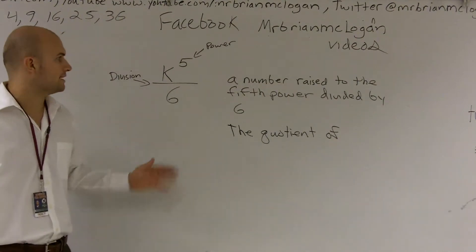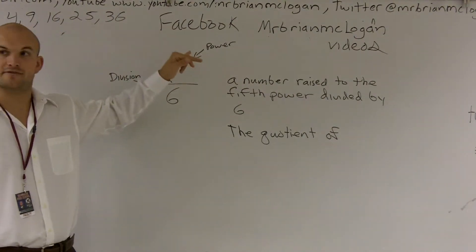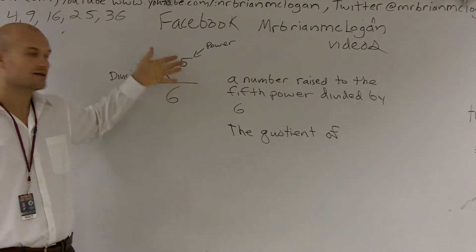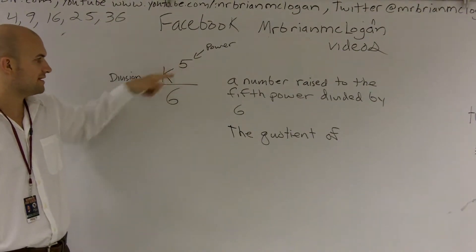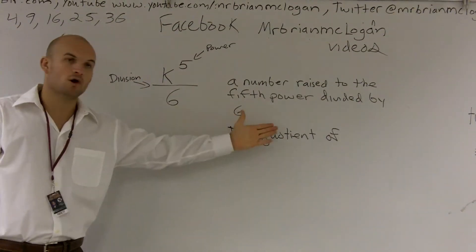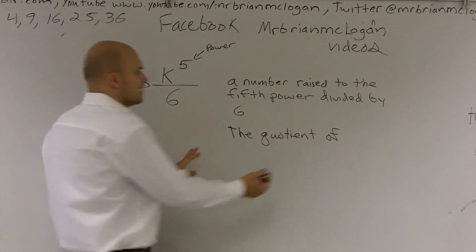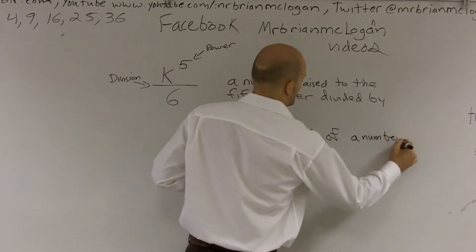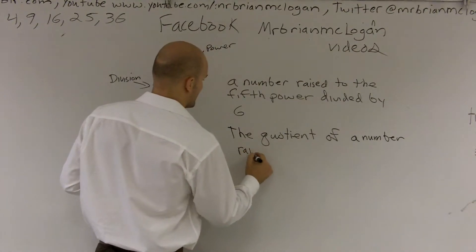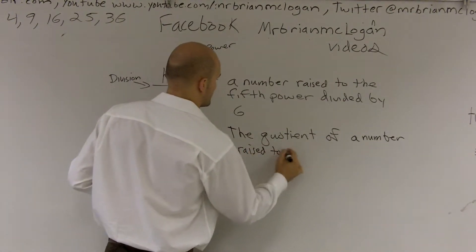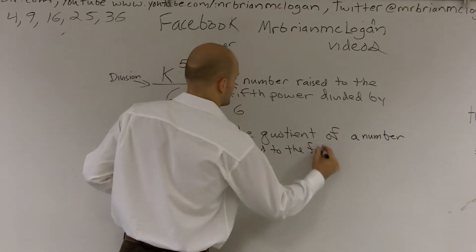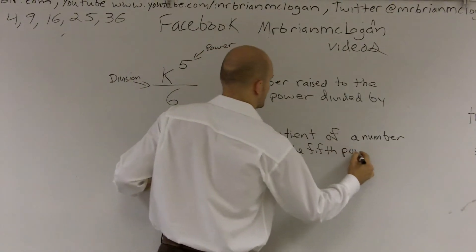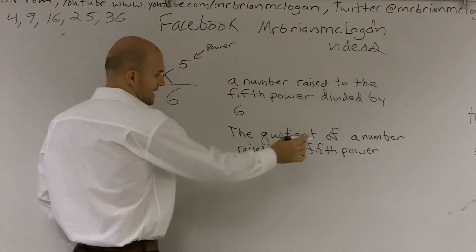And then what is being divided by what? Well, it's a number raised to the fifth and six. I'm dividing a number raised to the fifth by six. So it's the quotient or the division of a number raised to the fifth power and six.